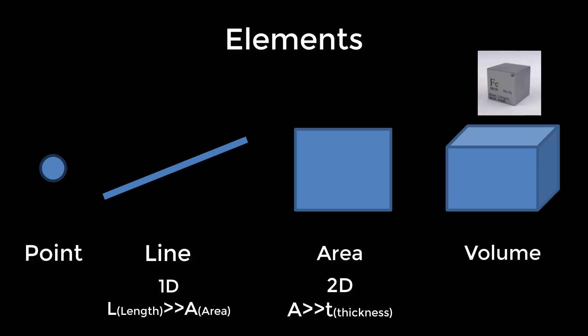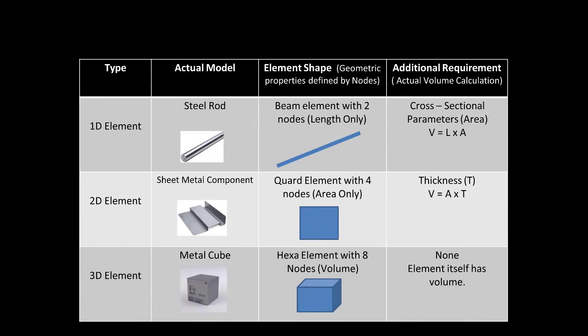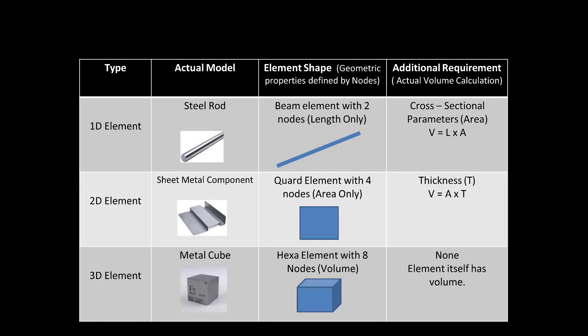Volume elements enable us to model the full volume of solid objects, accounting for stresses and strains in all directions. Since volume is required to get inertia, it's essential to recognize its significance in FEA. Different element types rely on specific parameters: 1D elements require cross-sectional area as an additional parameter to generate volume; 2D elements require thickness for volume calculation; 3D elements do not require any additional dimensions for volume determination. Each element type has specific requirements for accurate simulation.